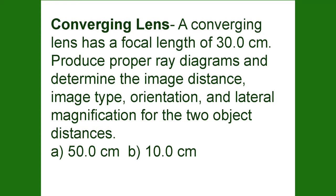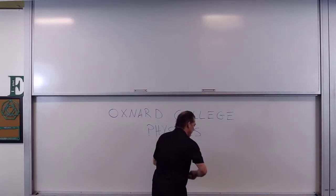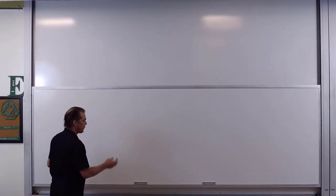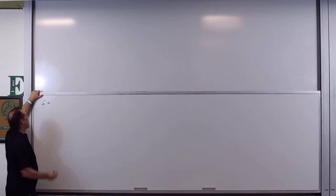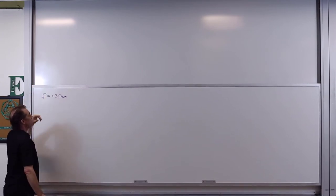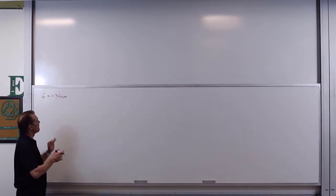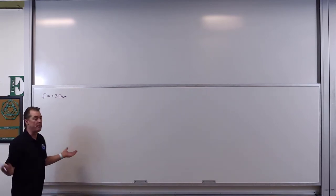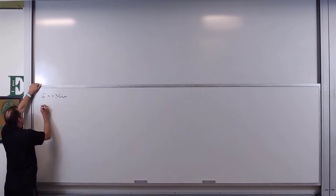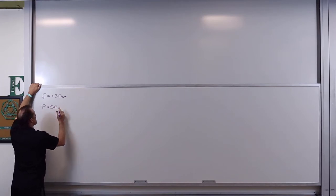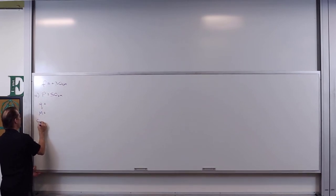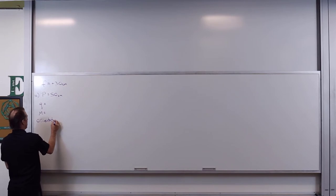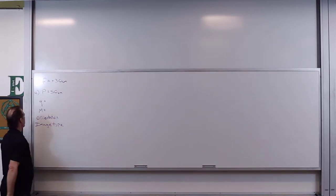Here's the problem. We've got ourselves a converging lens with a focal length of 30 centimeters. So F is equal to — is it positive or negative? It's a converging lens, so it has to be positive — plus 30 centimeters. We're going to place that lens at a distance of 50 centimeters from the object and ask: where's the image produced? So P equals 50 centimeters. We want to know what is Q, what is the magnification, what is the orientation, and the image type.